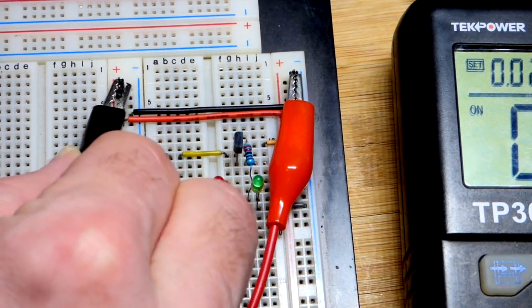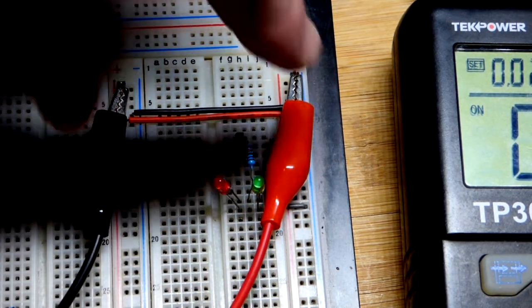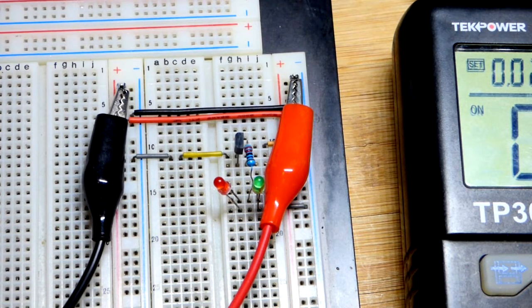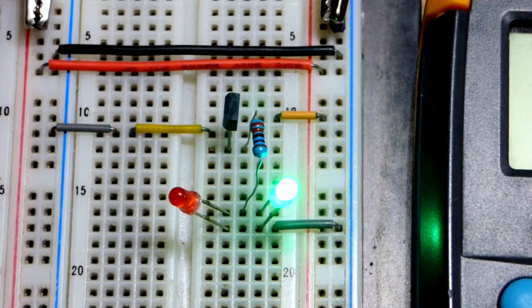We don't want the red LED to light up—that means we failed in preventing current from going the wrong way in the circuit. Now we have the polarity backwards and you can see the red LED is not lit up because the transistor is not conducting.